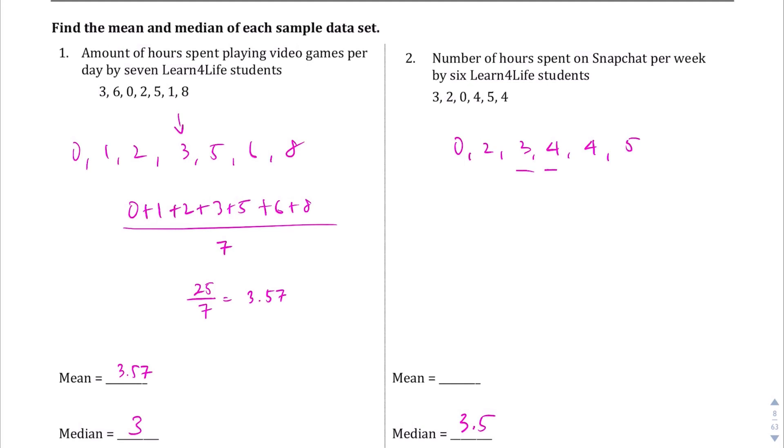And to find the mean, let's just add this all together and divide it by 6, because there's 6 items. 0 plus 2 plus 3 plus 4 plus 4 plus 5. So, what is that going to be? 5, 10, 18 divided by 6 items gives us 3. So, our mean is going to be 3. Okay. So, that was mean and median.